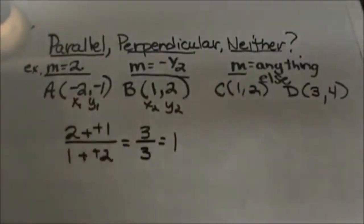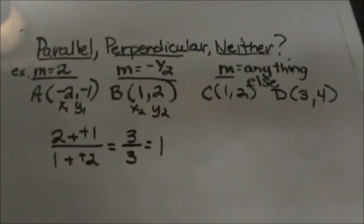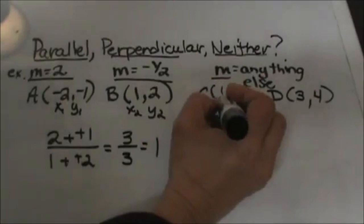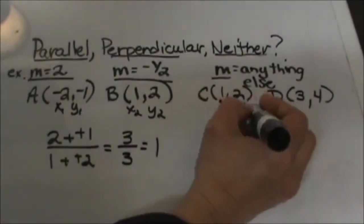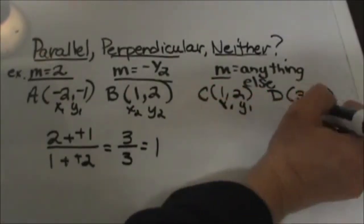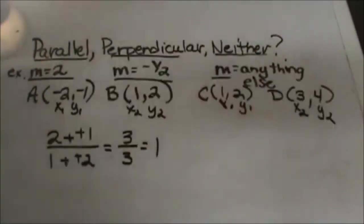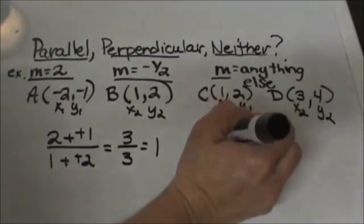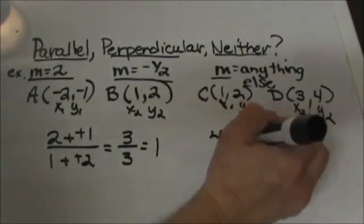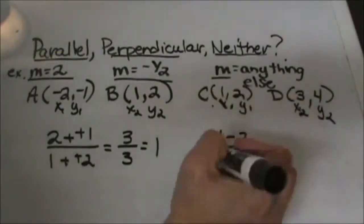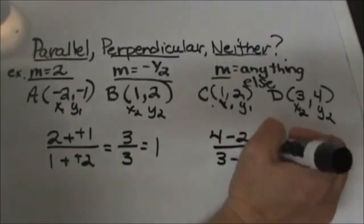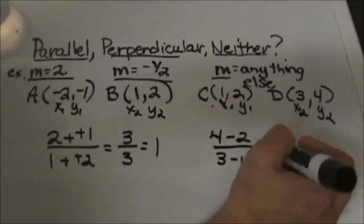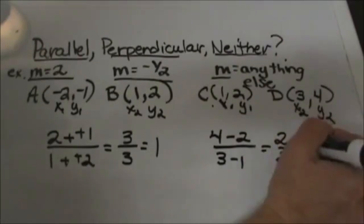Let's take the same equation with our two other points. So now we're going to label these x1, y1, x2, y2, and do the same thing. So I'm going to take the difference of my y's, so 4 minus 2 over 3 minus 1, and I'm going to get a positive 2 over a positive 2, which reduces down to 1.